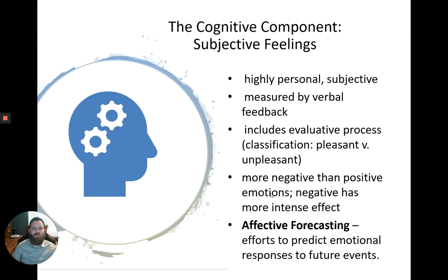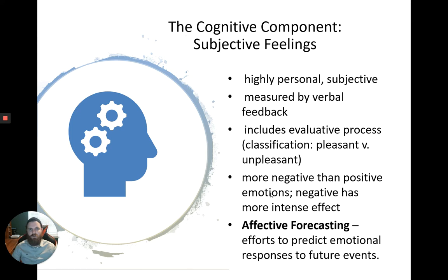Starting with the cognitive component: how do we feel? What are our subjective feelings? We measure a lot of these feelings through verbal feedback. This includes an evaluative process where we classify both pleasant and unpleasant experiences of emotion. Sadly, as human beings, we tend to think more about the negative emotions than the positive ones. Negative emotions have a more lingering, intense effect. For example, if you took four tests in one day and got 300s and then got a 50, there's a good chance you're going to be thinking about that 50.